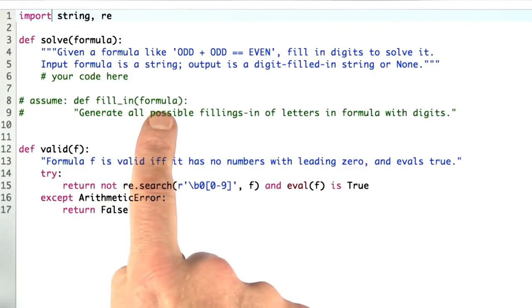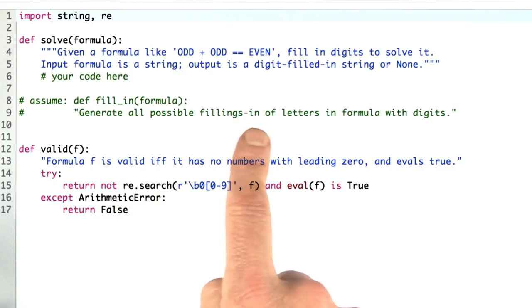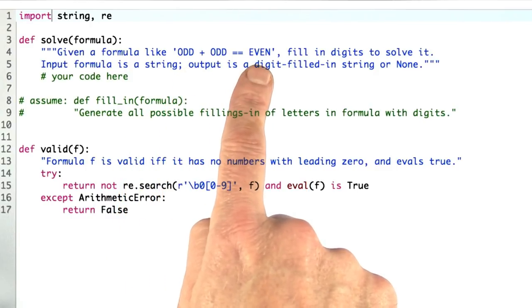fill_in takes a formula and generates a collection of all the possible fillings-in of the letters. So you pass it the string ODD plus ODD equals EVEN.